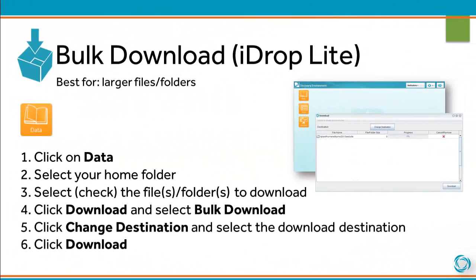To use Bulk Download, click on Data, select your home folder, and select the files and folders you wish to download. Then click Download and select Bulk Download. Click Change Destination and select the download destination. Finally, click Download.